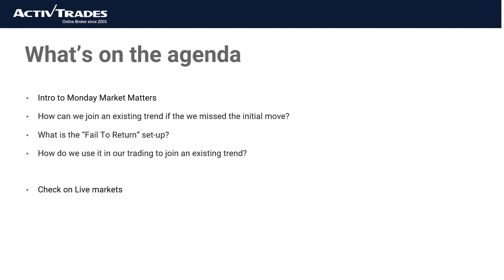What should we cover today? As always, we'll have a little bit of a chat about Monday Market Matters and, in particular, things like the news elements coming up. But what we're going to talk about is: how can we join an existing trend if we have missed the initial move? We'll look at what the FTR setup is — the fail to return — and how we could use it in our trading. Then, as always, we'll take a look at the live markets just to give us a little bit of insight as we approach the start of the US markets.